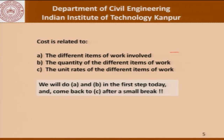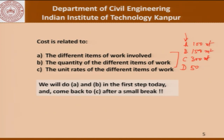What we are trying to say is: if there are items A, B, C, and D, first we make a list of these items, then determine their quantities — perhaps 100 square meters, 150 square meters, 300 cubic meters, 50 running meters, and so on. And finally, we determine the unit rate for each: A might cost 10 rupees, B might cost 20, C might cost 25, and so on. Once we have this picture, we can figure out the total cost of the project.